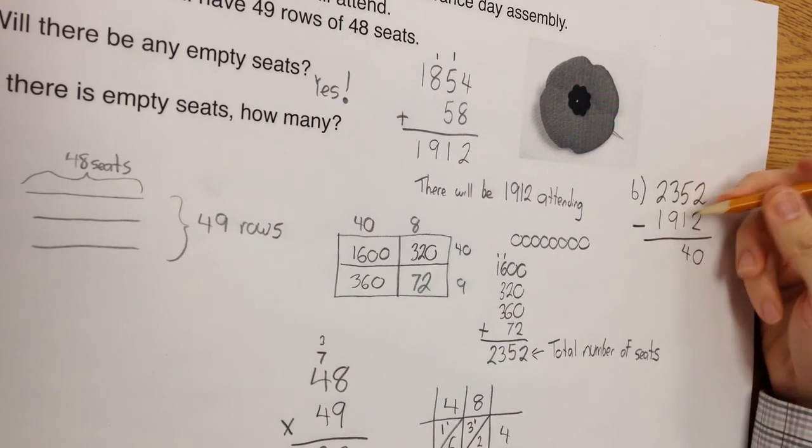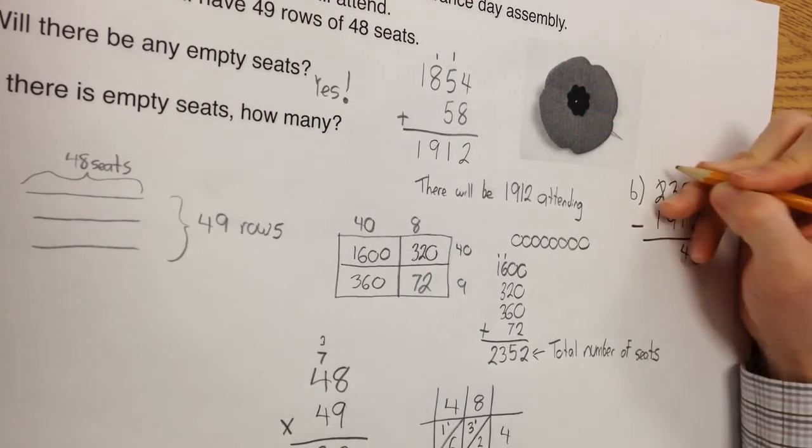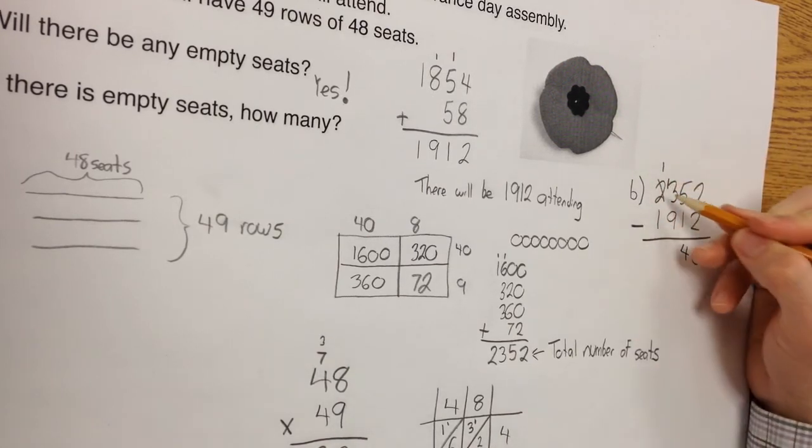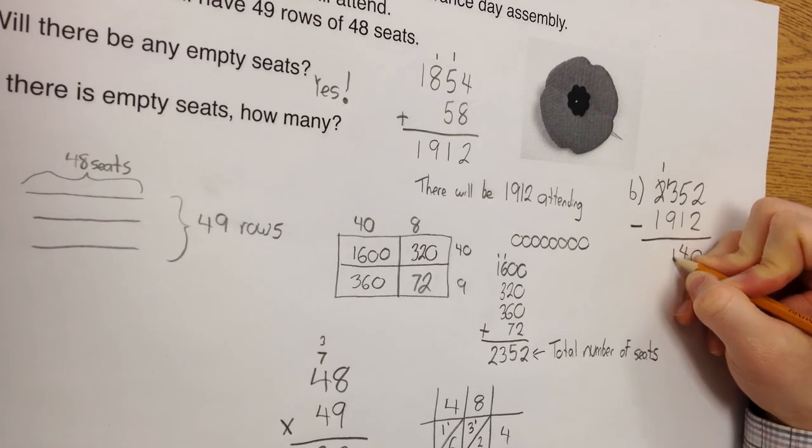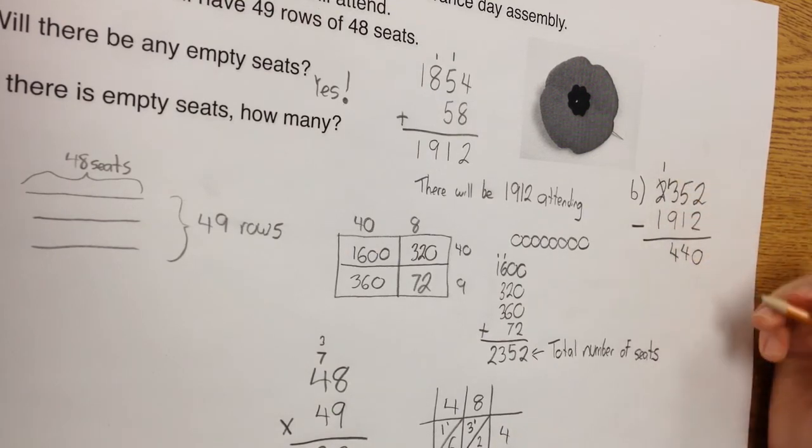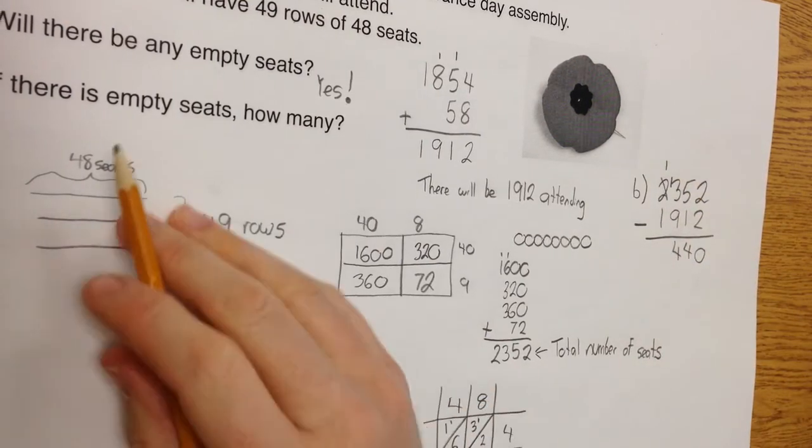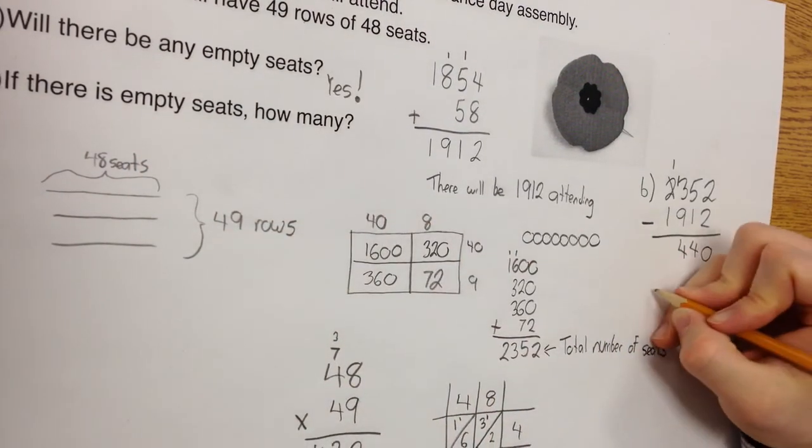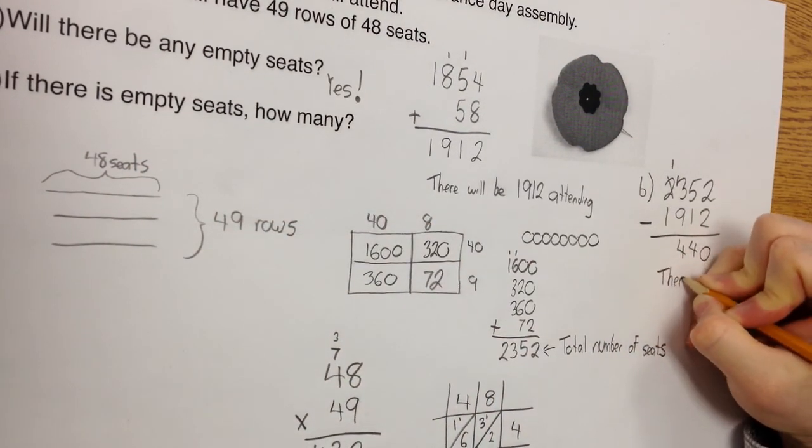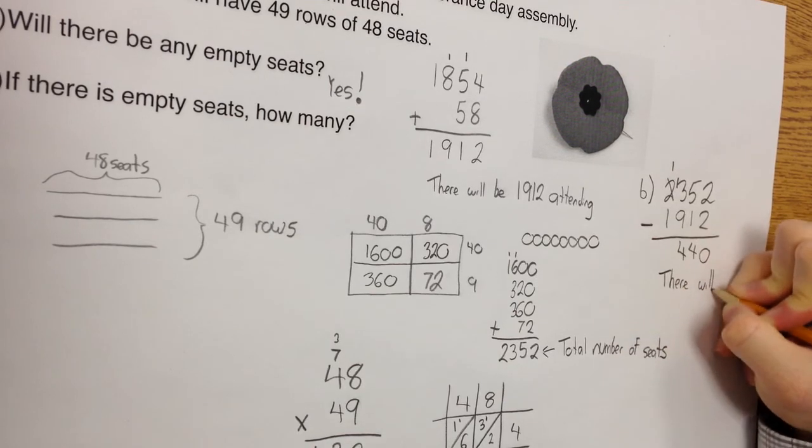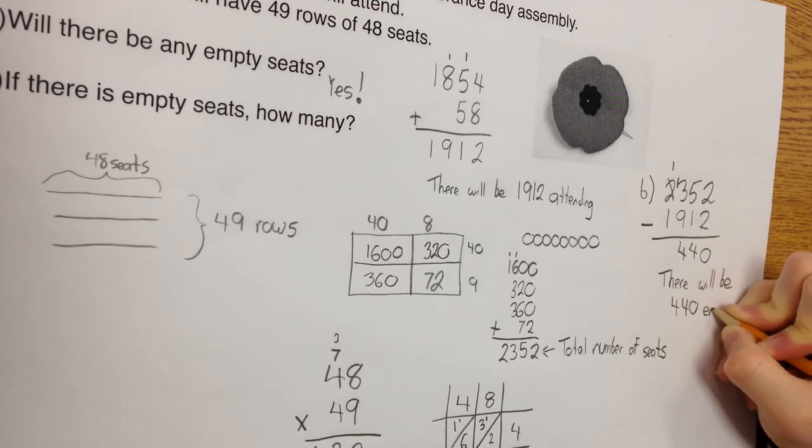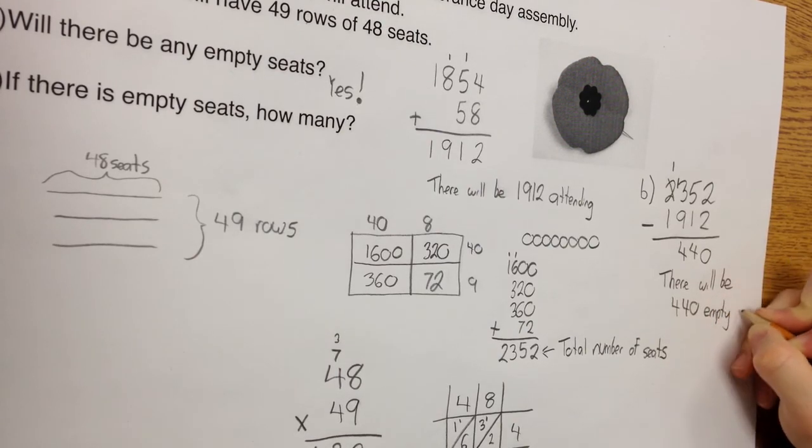That becomes a 1. This becomes 13. 13 take away 9 is 4. And 1 take away 1 is 0. So if there are empty seats, how many? There will be 440 empty seats.